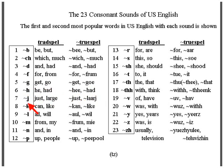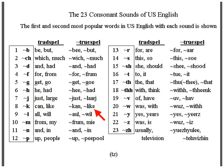The J sound, spelled by the letter J, as in 'just' and 'large.' Then the K sound, spelled by the letter K, as in 'can' and 'like.' 'Can' is most often pronounced 'k'n' in USA English — 'I can do it.'